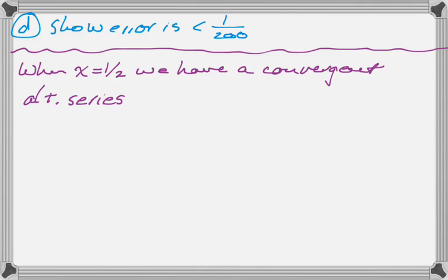So the limit is 0 and the terms decrease. And it's alternating. But anyway, therefore, the error is less than the first term that we left off.